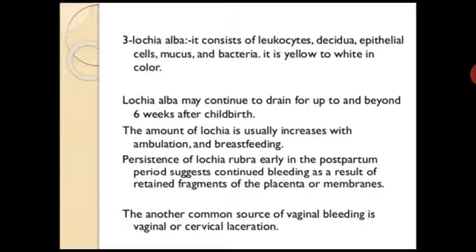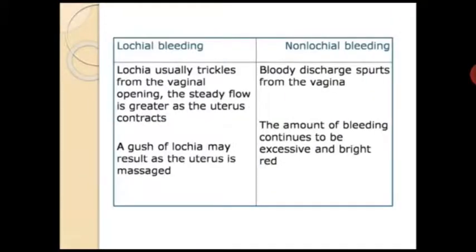Lochia alba may continue to drain up to and beyond six weeks after childbirth. The amount of lochia usually increases with ambulation and breastfeeding. Persistence of lochia alba early in the postpartum period suggests continued bleeding as a result of retained fragments of placenta or membrane. Another common source of vaginal bleeding is vaginal or cervical laceration. Lochia bleeding usually trickles from the vaginal opening; the flow is greater as the uterus contracts, whereas non-lochia bleeding is a bloody discharge that spurts from the vagina.